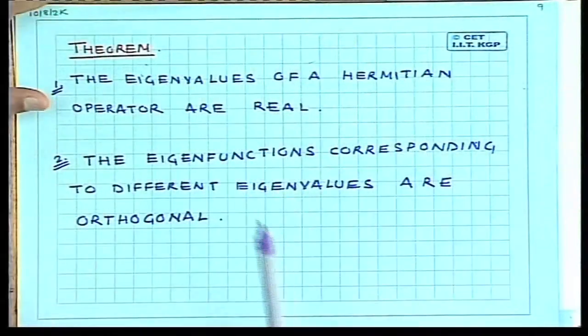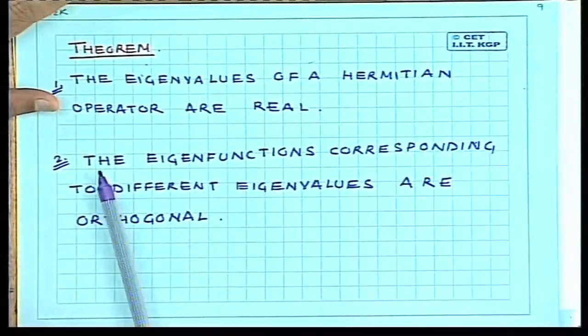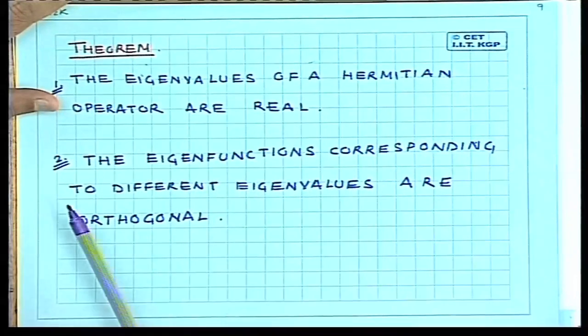In the previous lecture, I told you that in quantum mechanics every dynamical variable is represented by a Hermitian operator. In the last class, we proved that the eigenvalues of a Hermitian operator are real and the eigenfunctions of a Hermitian operator are orthogonal.